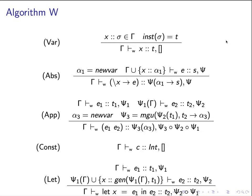Algorithm W is also formulated in the form of a judgment. For simplicity, there are some other so-called explanations or interpretations written in a more functional style in the literature, but for now we treat it such that gamma is always the input, the program expression is also an input, and the output will be the type and a substitution. So there are two inputs — the type environment and the program — and two outputs: the type and the substitution. To differentiate it from the Hindley-Milner type system, we use a subscript W.